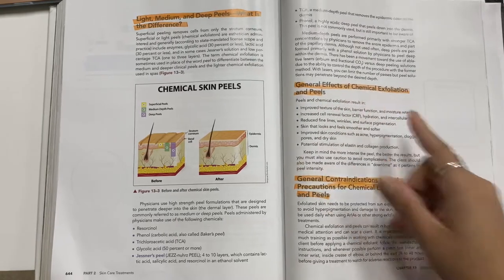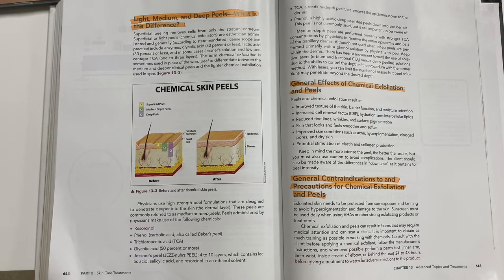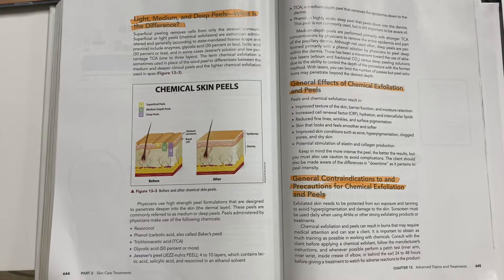General effects of chemical exfoliation and peels include: improved texture of the skin, barrier function and moisture retention, increased cell renewal factor, hydration and intercellular lipids, reduced fine lines and wrinkles, surface pigmentation improvement, smoother and softer skin, improved acne and hyperpigmentation, clogged pores, dry skin, and potential stimulation of elastin and collagen production. Keep in mind that the more intense the peel, the better the result, but you must use caution to avoid complications.